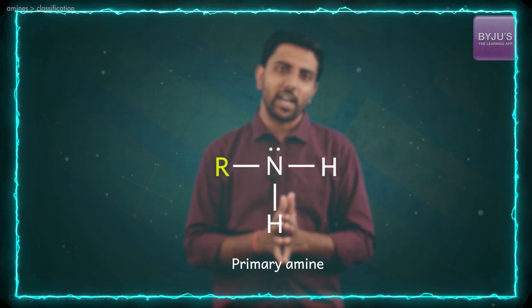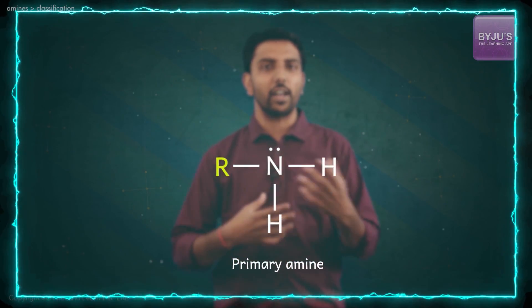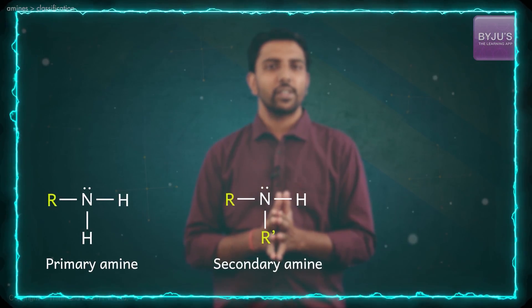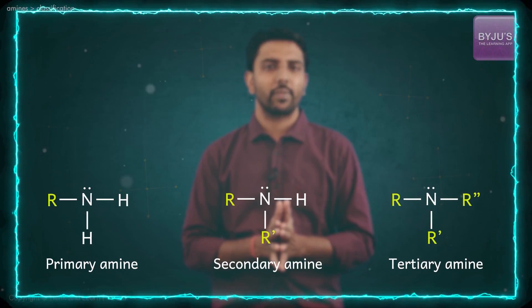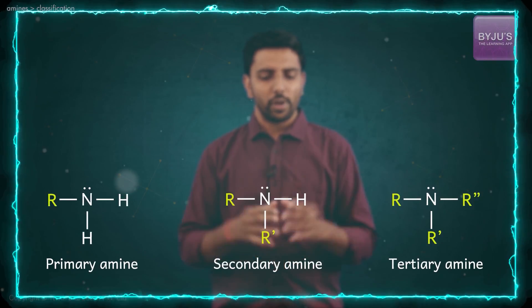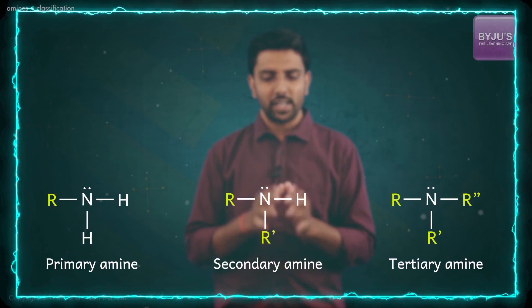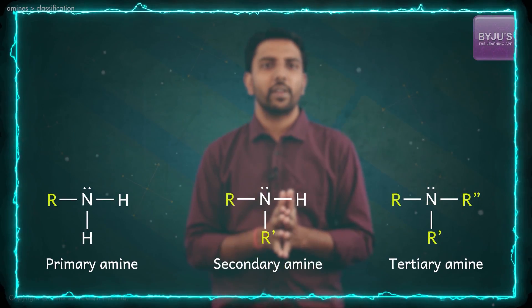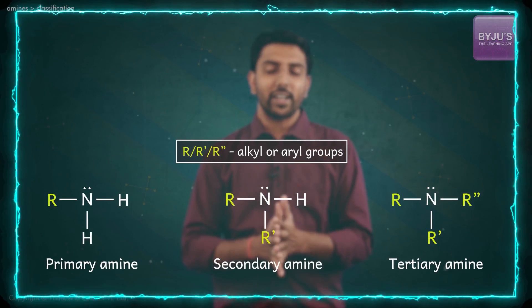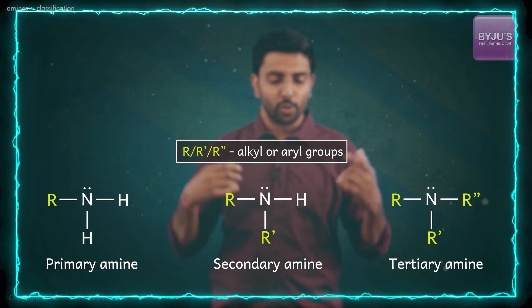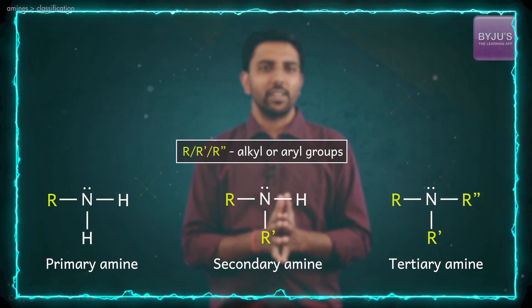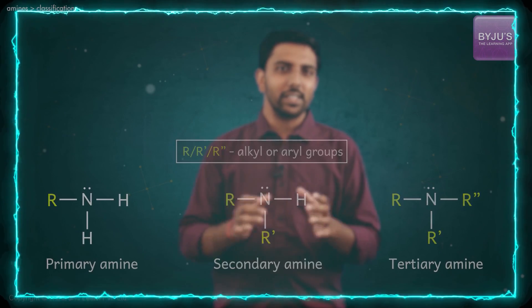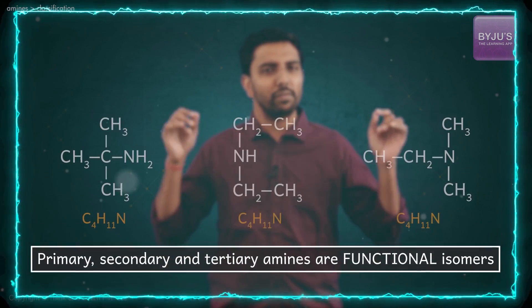The most generic template is RNH₂, so this would be called a primary amine. If any more of the hydrogen atoms are replaced by other alkyl groups, we call them secondary amines and tertiary amines respectively. Now if you look at the alkyl group as R, it can be a normal aliphatic alkyl group or it could be an aryl group. What is interesting here is that primary, secondary, and tertiary amines are all functional isomers of each other.